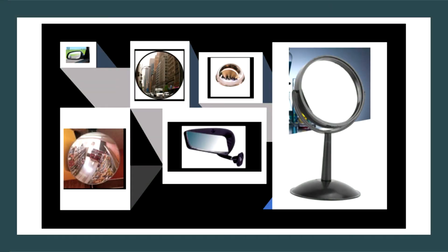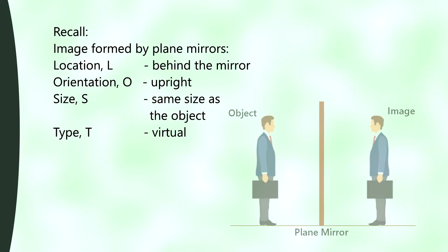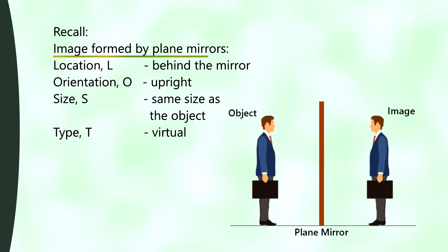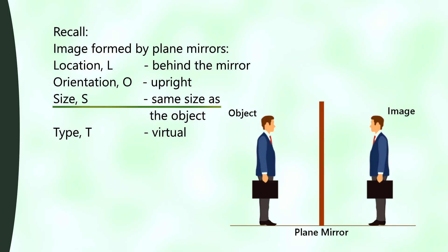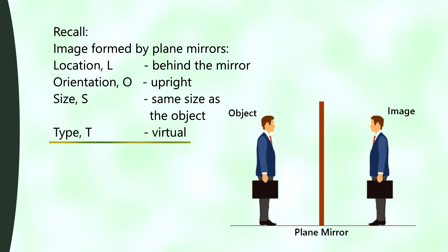In our previous discussion, we have learned that plane mirrors produce images that are located behind the mirror, the orientation is upright, same size as the object, and the type is virtual.